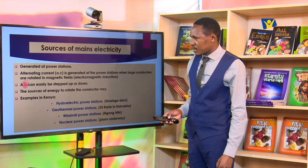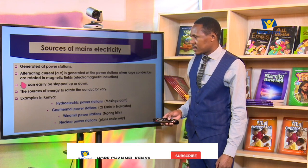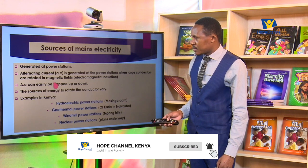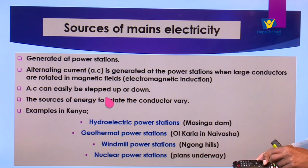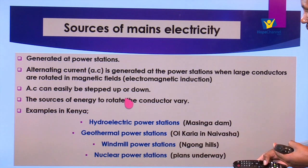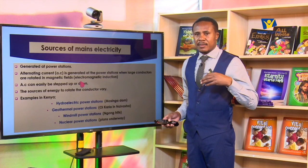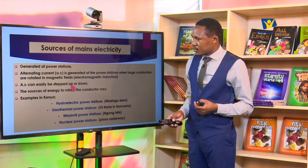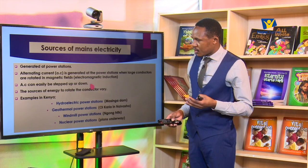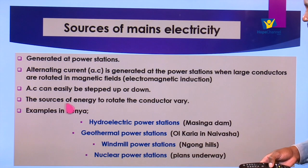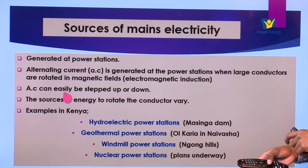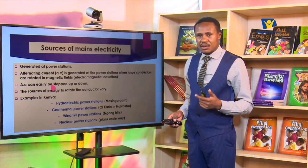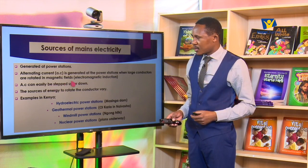When we talk about AC in this topic we are referring to alternating current. AC is preferred because it can easily be stepped up or stepped down. In electromagnetic induction we discussed the types of transformers. In the process of transmission the power is always stepped up or down depending on the point in the transmission. Stepping up means increasing the voltage and stepping down means lowering the voltage. AC is preferred over direct current because it can easily be stepped up or stepped down.